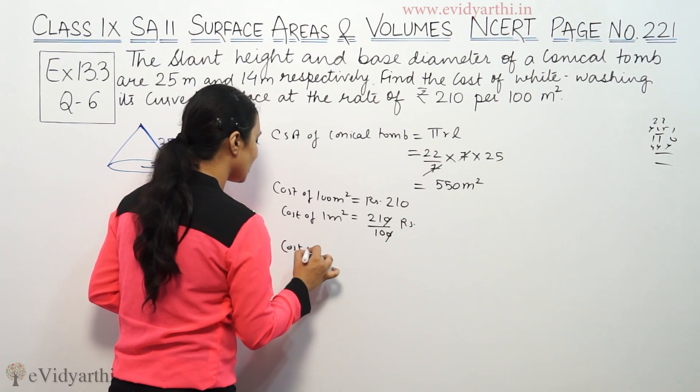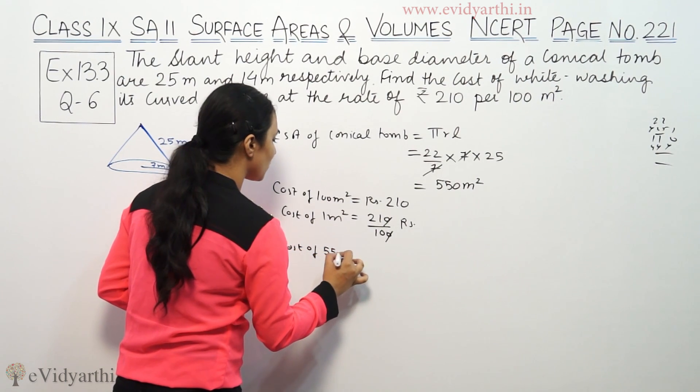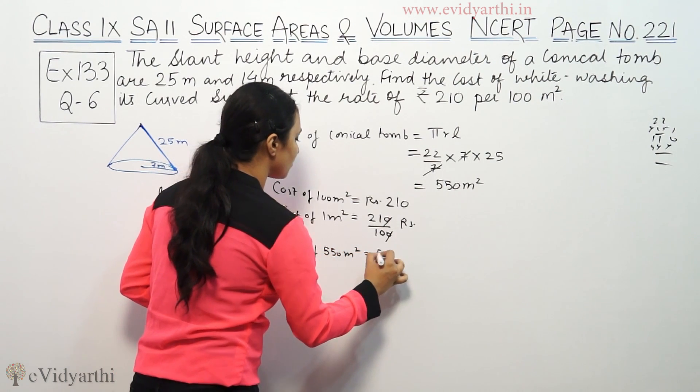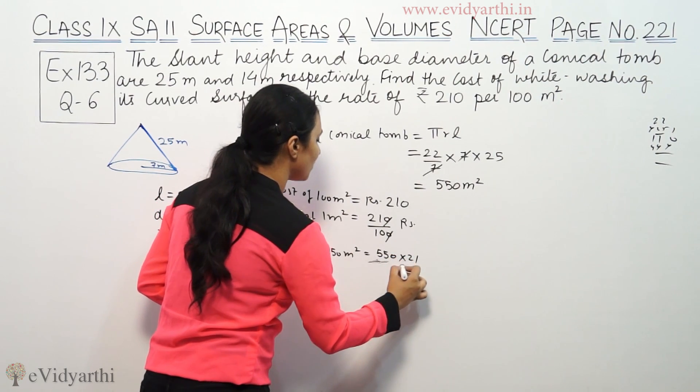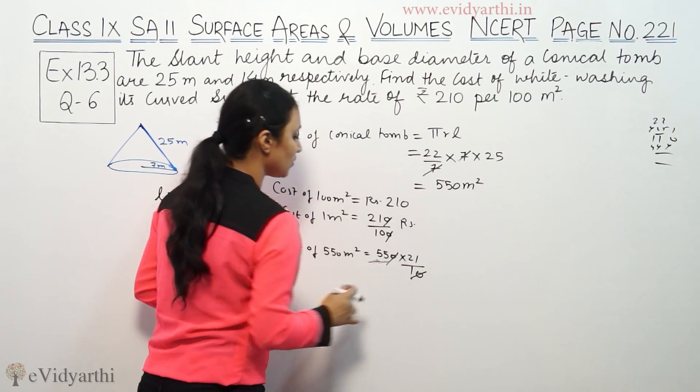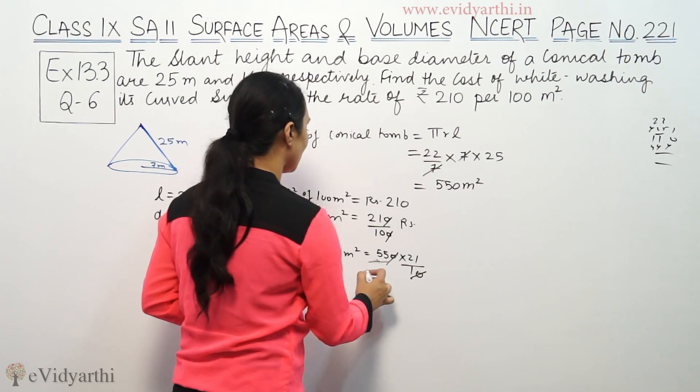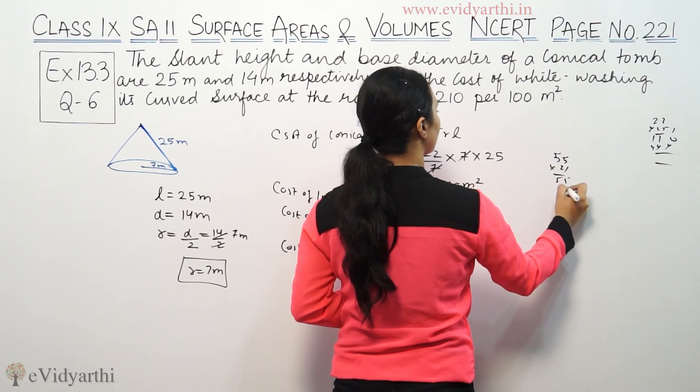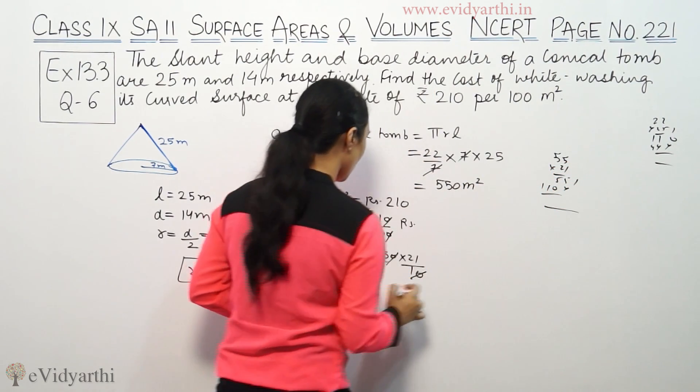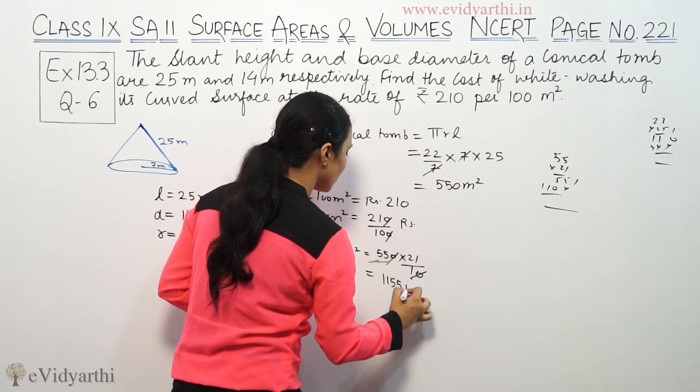So cost of 550 meters square: 550 into 21 by 10. Zero and zero cancel, so 55 into 21 equals 1155 rupees. This is the cost.